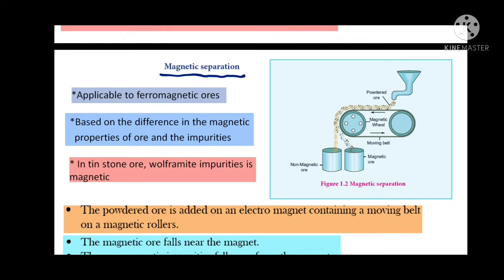This method is applicable to ferromagnetic ores and is based on the difference in the magnetic properties of ore and impurities. For example, in tin stone ore, the wolframite impurities are magnetic, while tin stone ore itself is non-magnetic. Both are having different magnetic behavior.